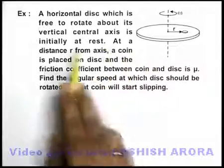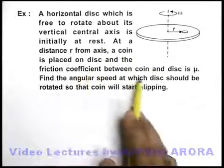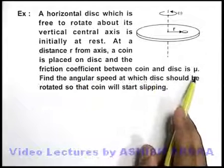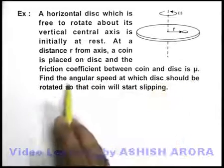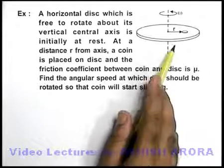At a distance r from the axis, a coin is placed on the disc, and the friction coefficient between the coin and the disc is mu. We are required to find the angular speed at which the disc should be rotated so that the coin will start slipping.